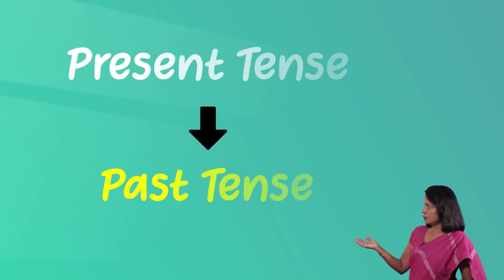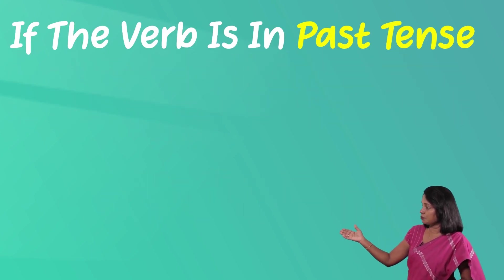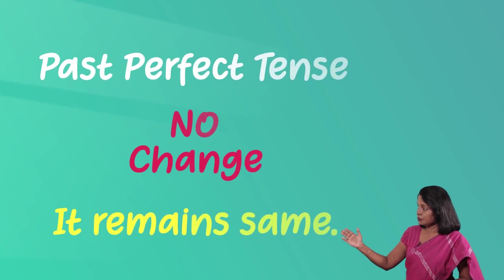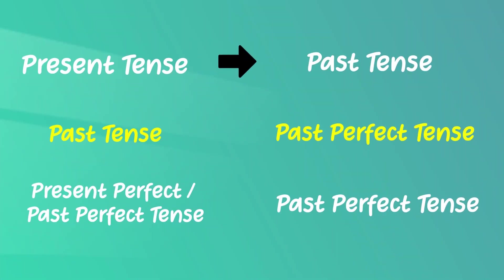Now, what happens if the tense is already in past tense? According to this, the present tense form becomes past tense. If the verb is in past tense, it becomes past perfect tense. If the verb is in present perfect tense, that also becomes past perfect tense. If the verb is already in past perfect tense, there is no change — it remains the same. In short, when you report something, the verb goes one step backward: present becomes past, past becomes past perfect, and present perfect and past perfect both become past perfect.